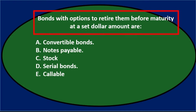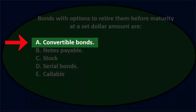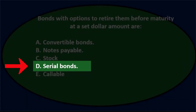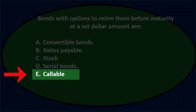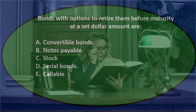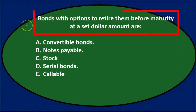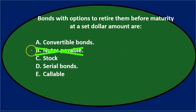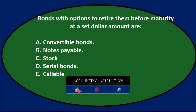First question: bonds with options to retire them before maturity at a set dollar amount are — A) convertible bonds, B) notes payable, C) stock, D) serial bonds, or E) callable bonds. Using process of elimination: A, convertible bonds, sounds somewhat reasonable, so I'll keep that. B, notes payable — a bond and a note payable are both liabilities but not exactly the same, so probably not B.